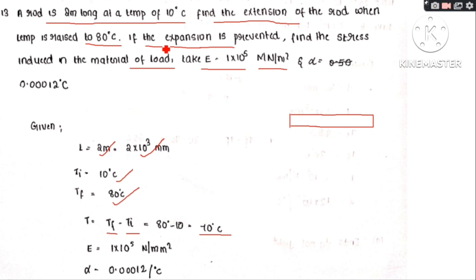If the expansion is prevented, find the stress induced in the material of the rod. The temperature change will be applied to find the thermal stress in the rod.